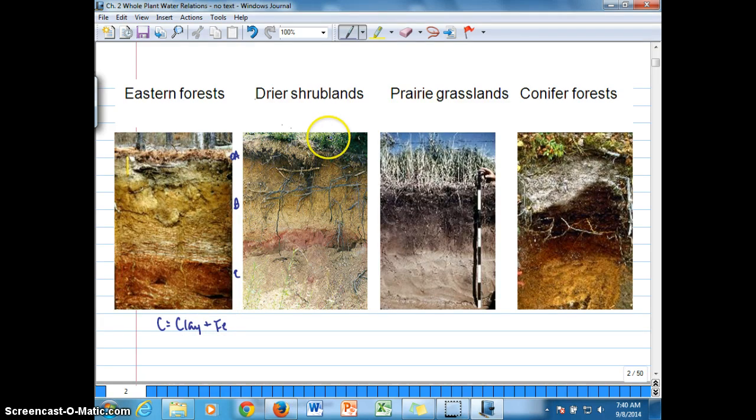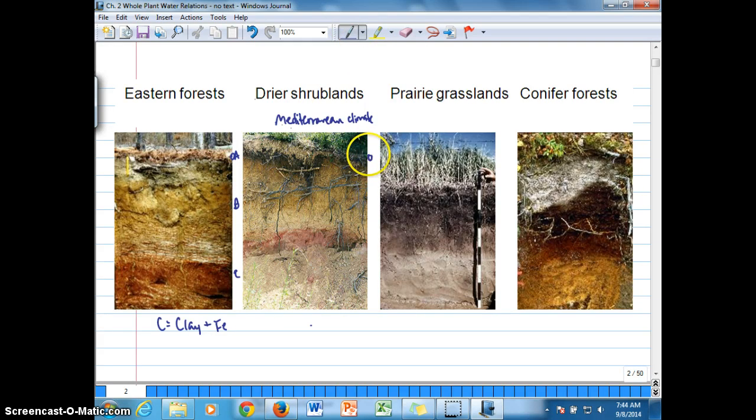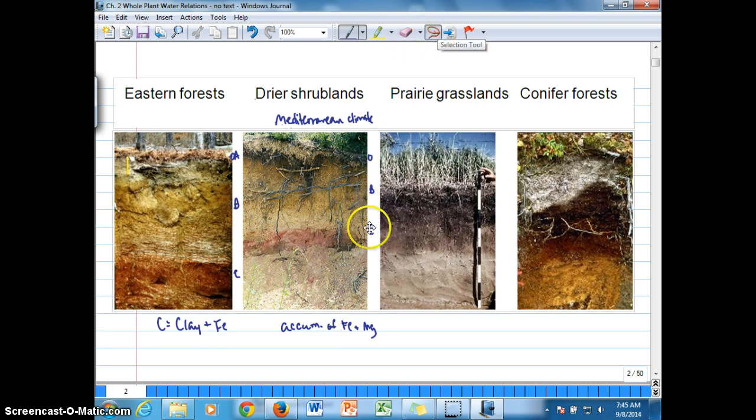In drier shrubland areas, Mediterranean climate regions such as the western U.S., Mediterranean Basin, Chile, and parts of Australia, we can see the O-horizon here, the A-horizon in this region, and C here. In this region, there's an accumulation of iron and magnesium, which gives the B-horizon a bit more of this purple color.